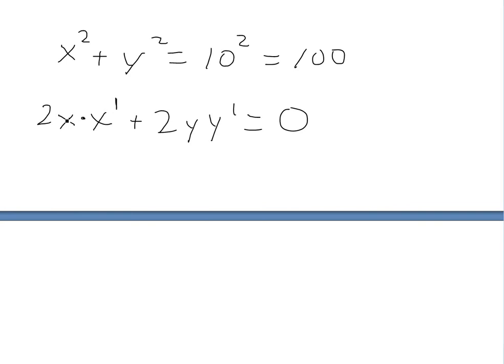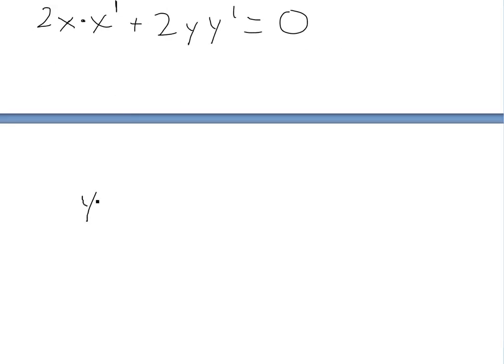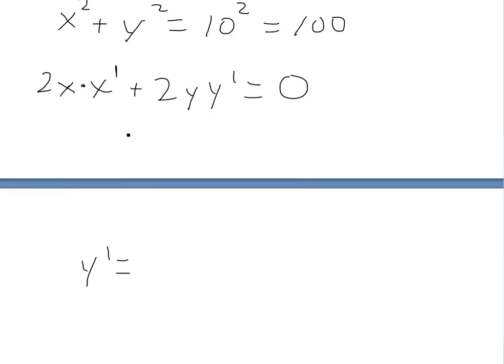So now we can cancel the 2s out, solve for y prime. We get y prime is equal to, shift this over to the right, negative x times x prime, all over y.